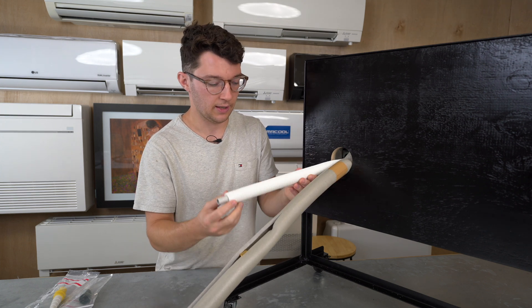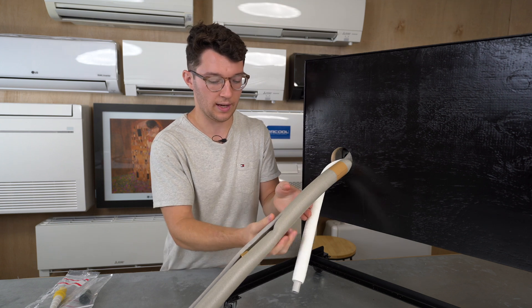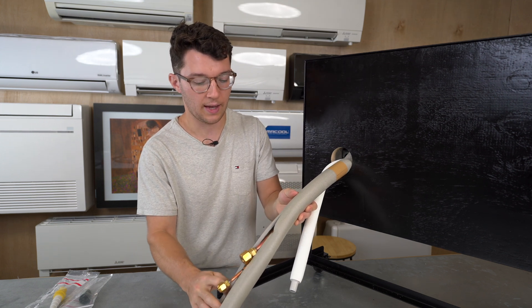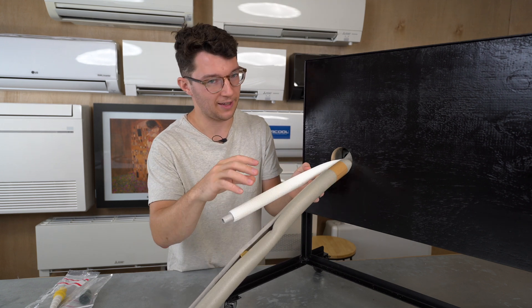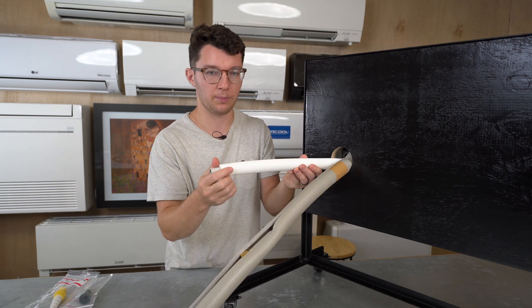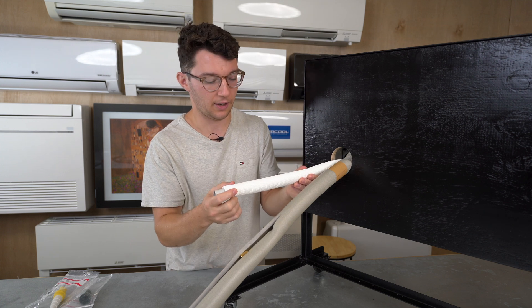You have your condensate line here that's insulated as well as your refrigerant lines that are also insulated. Today we're going to ignore the refrigerant lines and simply talk about the condensate line, the condensate hose.